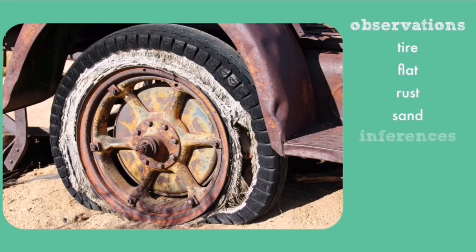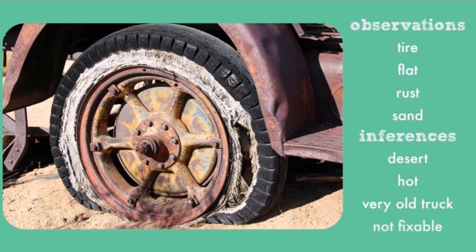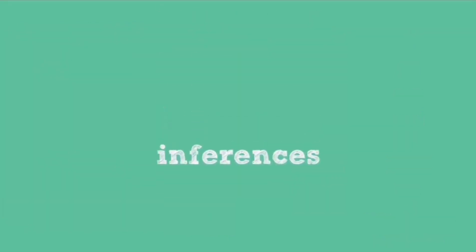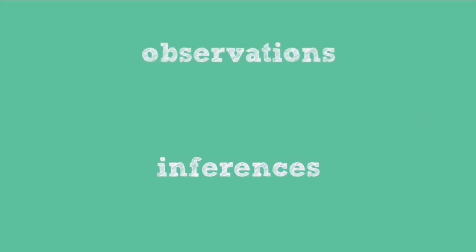Now I'll state some inferences that I've made about this picture. Based on the sand, I think this might be in the desert, which makes me also think that it's very hot there. I think it's part of a very old truck because of the way the wheel well looks. And I'd also infer that the tire is not fixable because of the white threads that I can see on the edge of the tire. Those are all inferences. When you make inferences, be sure that your observations can back up your inferences. If new observations come in that don't fit your previous inference, it's time to revise your ideas.